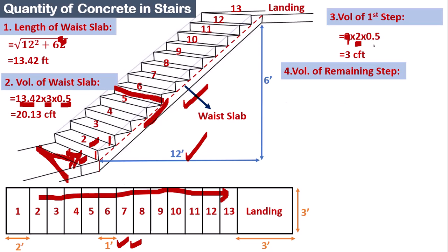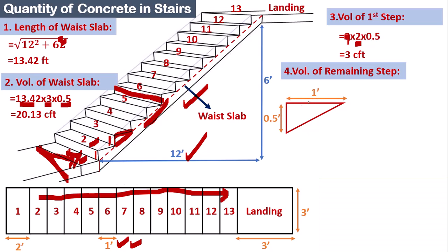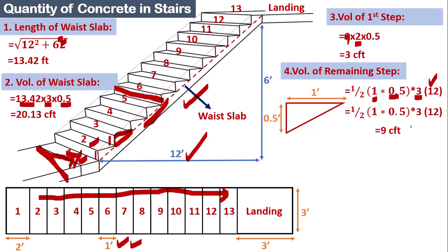Step four: calculate the volume of the remaining 12 steps. When we separate the waist slab from the steps, each step forms a right-angle triangle with a tread of 1 foot and a riser of 0.5 feet. Area = ½ × base × height. Multiplying by the stair width (3 ft) and 12 steps gives a volume of 9 cubic feet.